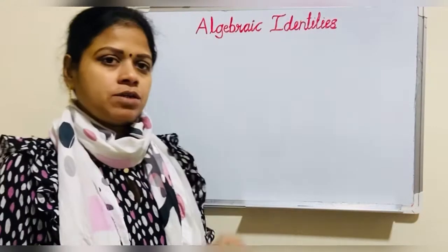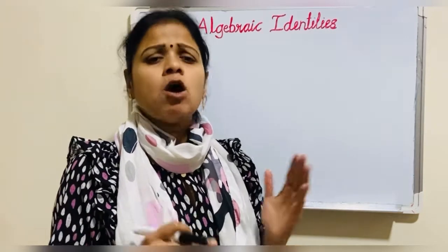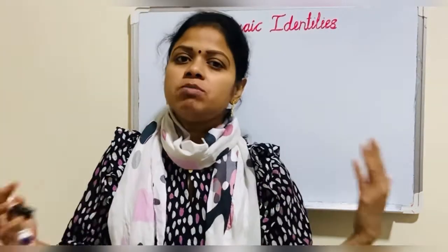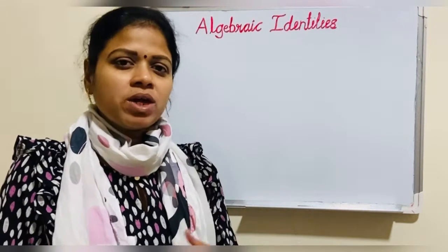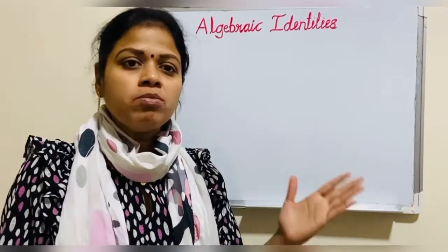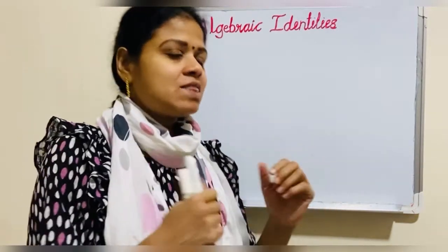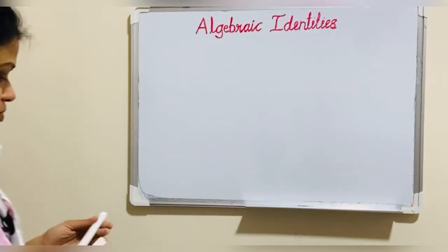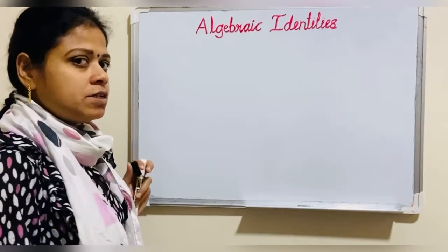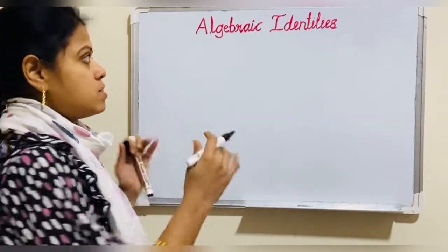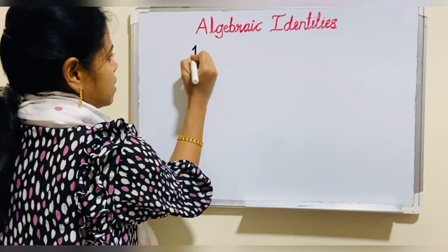Hi, Algebraic Identities — how to remember the algebraic identities, how to write them in an easy way, and also we can see some problems related to algebraic identities in this video. So let's start. To remember the algebraic identities, use Pascal's Triangle. The Pascal's Triangle is like this one.